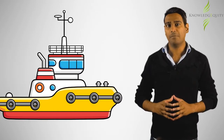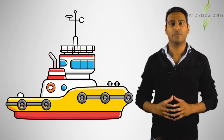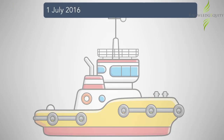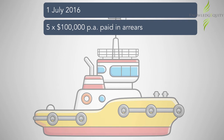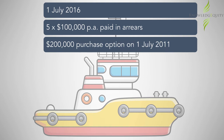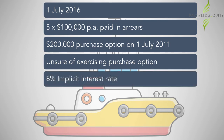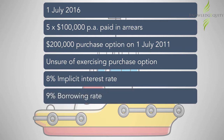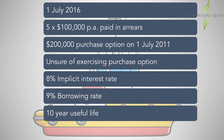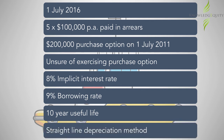Now let's see how these concepts would apply using a comprehensive example. Harbour Limited entered into a lease agreement for the use of a new tugboat on the 1st of July 2016. The key terms of the lease require five annual payments of $100,000 to be paid in arrears and an option to purchase the tugboat for $200,000 on the 1st of July 2021. Harbour Limited is unsure if it will exercise the purchase option. The interest rate implicit in the lease is 8% and Harbour Limited's incremental borrowing rate is 9%. The useful life of the tugboat is 10 years and Harbour Limited uses the straight line depreciation method. What is the initial measurement of the lease liability and the right of use asset on the 1st of July 2016?